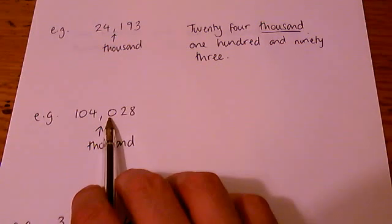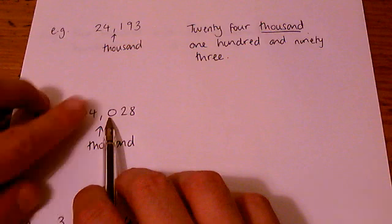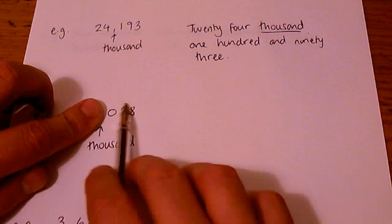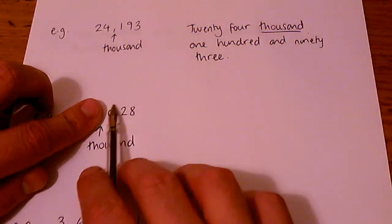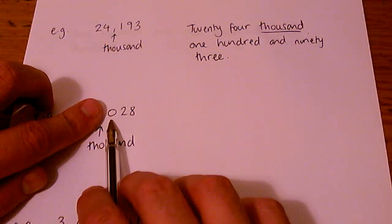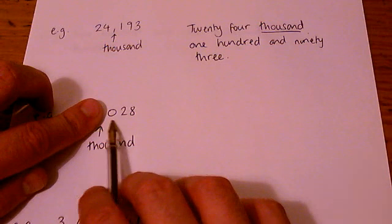Well, the zero means there are no hundreds in this number. So this bit here really just represents 28. So we're not even going to write zero hundred. Don't bother writing that. Just write 28.